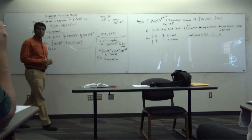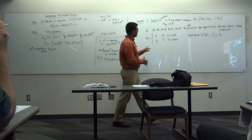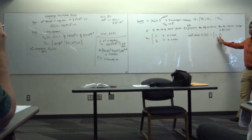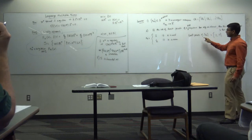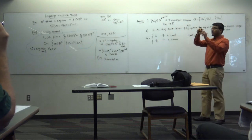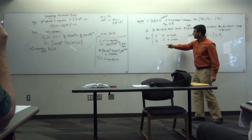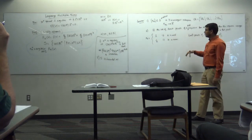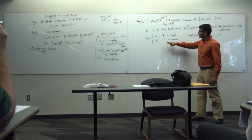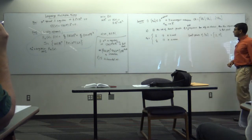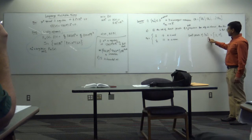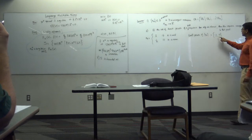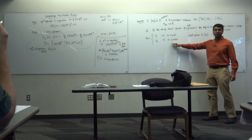The limit points of x_k are {1, 0}. This sequence doesn't converge because it has two limit points. The odd subsequence converges to 1, the even subsequence converges to 0. Since the set of limit points has two elements, the original sequence does not converge.